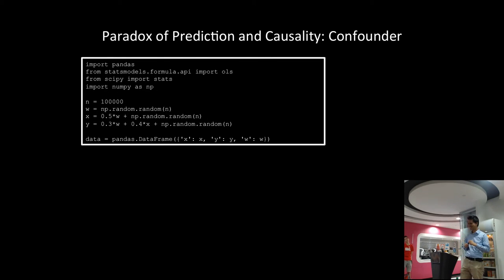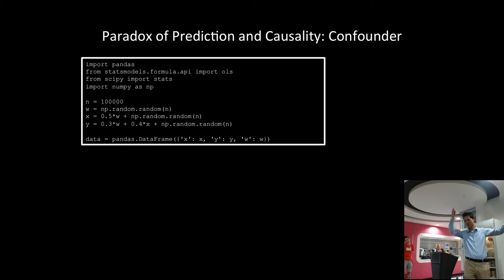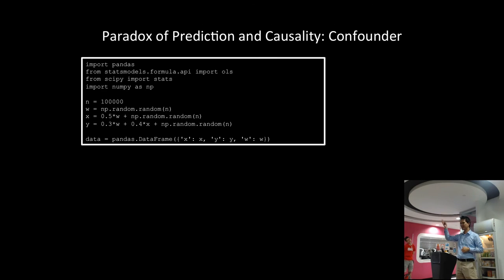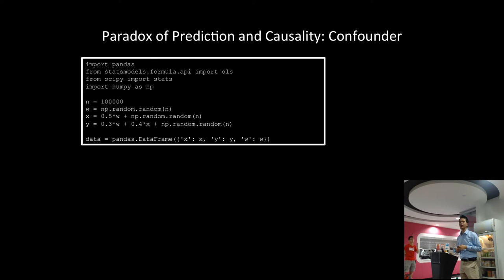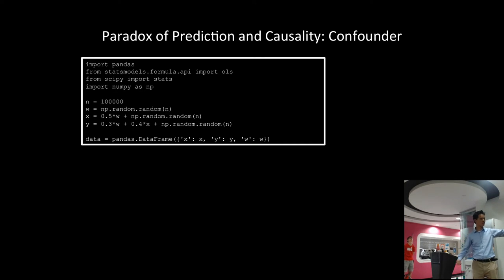Using pandas, scipy, and numpy, we're going to try to generate 100,000 people. We draw a random number W — everyone is normally distributed on how intelligent they are. Mean zero. And then we'll say X is 0.5 of W, plus some random noise. And then Y — your income — is a function of how smart you are, with a weight of 0.3, and then your education with a weight of 0.4. So education still helps you more than being smart. Then I put it into the data frame.